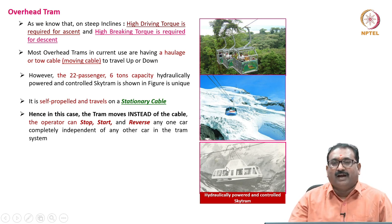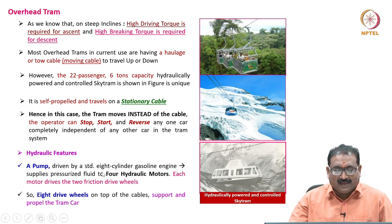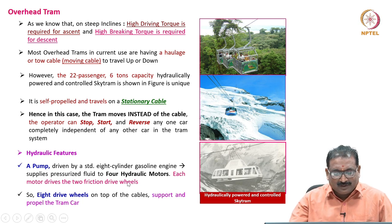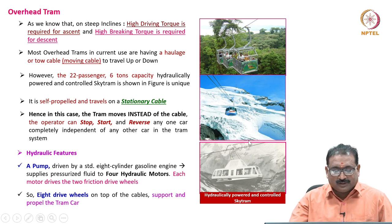That is the beauty of the hydraulic system used in the overhead tram. The main features: a pump driven by a standard eight-cylinder gasoline engine supplies pressurized fluid to four hydraulic motors. Each motor drives two friction drive wheels, so eight drive wheels on top of the cables support and propel the tram car.